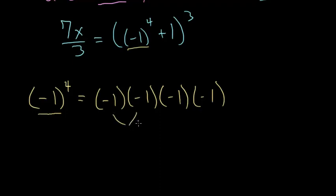Notice negative 1 and negative 1 multiply to get positive 1, and here the same would be true we'd have positive 1. So in the end we're just multiplying 1 times 1 which we know is 1. So negative 1 to the fourth power is simply 1.